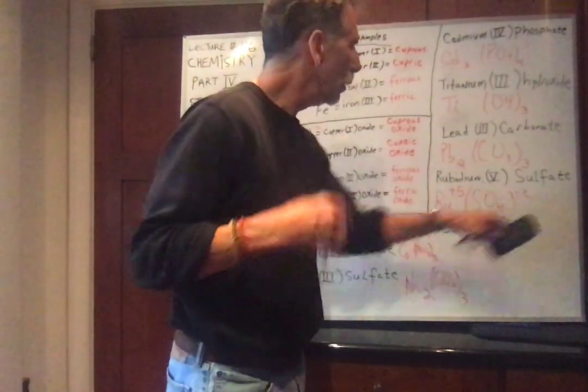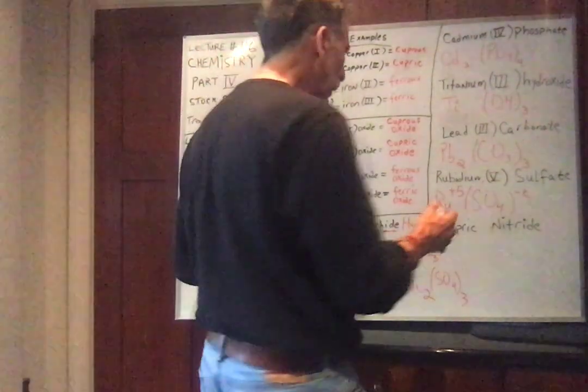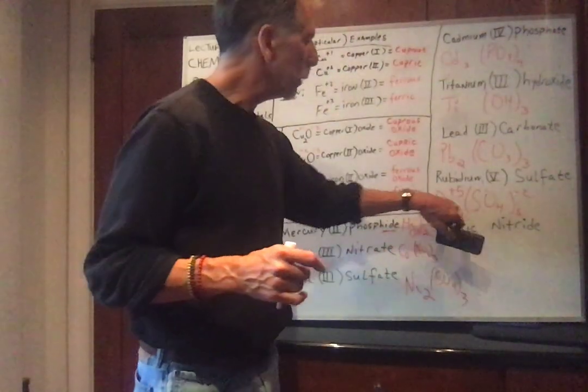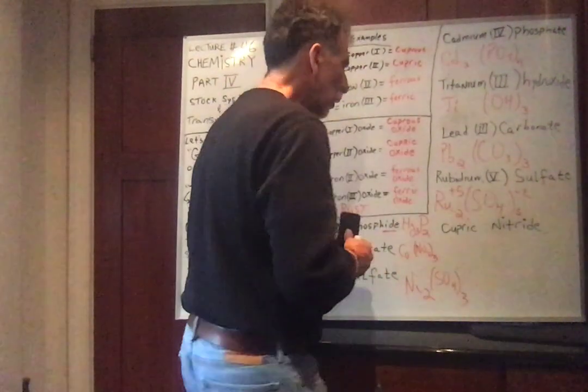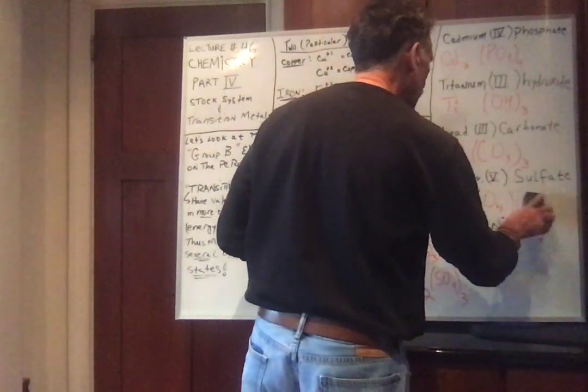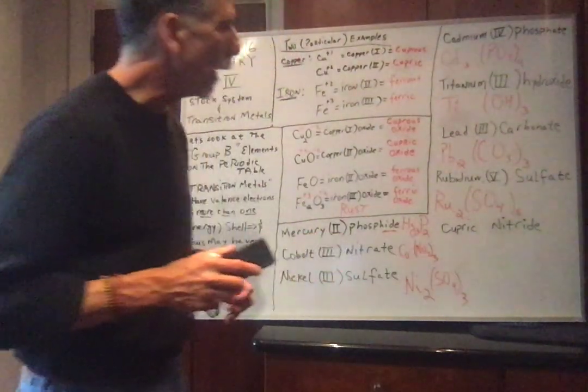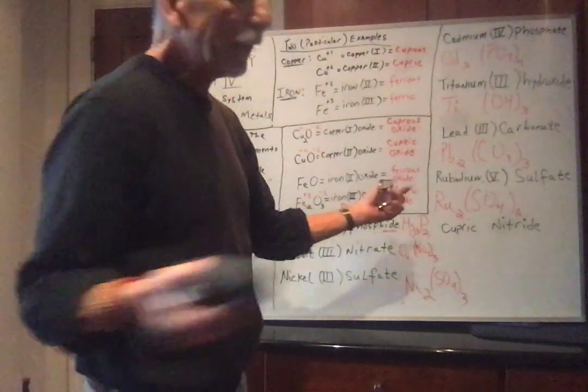The common number that you can do or common denominator would be 10. So if I put a 2 here and a 5 here, now the rubidium gives 10 electrons, the sulfate ion takes 10 electrons. I can erase the oxidation numbers. And there we have rubidium 5 sulfate: Ru2(SO4)5.